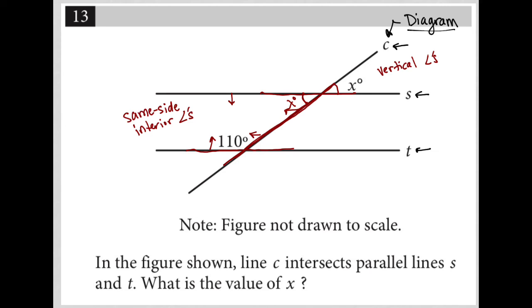And same side interior angles are supplementary. So that should sound familiar from geometry class. If not, it's a little bit of review for your notes. So same side interior angles are supplementary, which means if we have 110 degrees here, this X must be 70 degrees. Because again, supplementary actually means equals to 180 degrees. So our answer here would be 70 for the value of X.